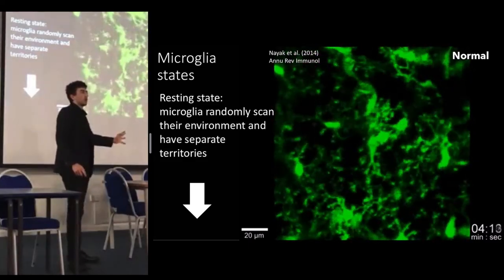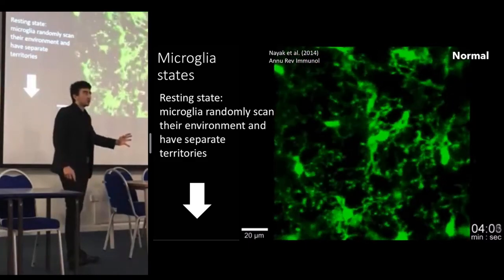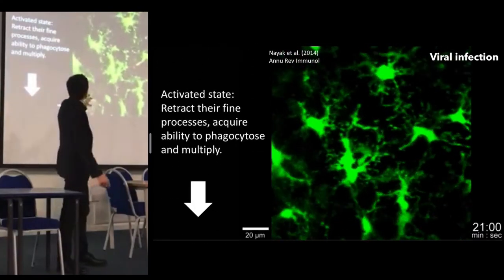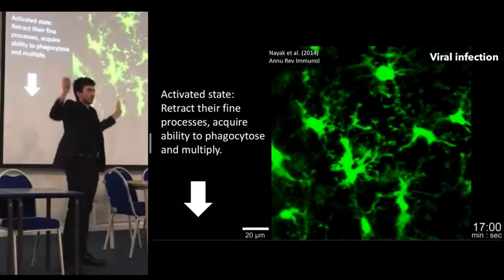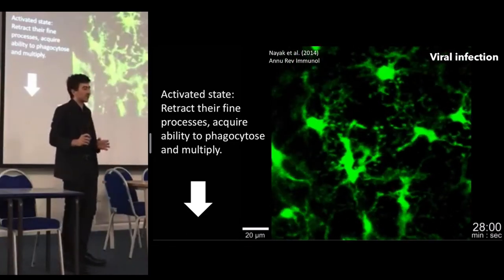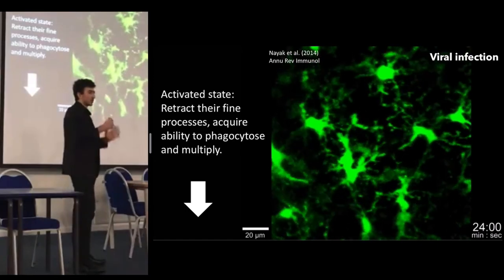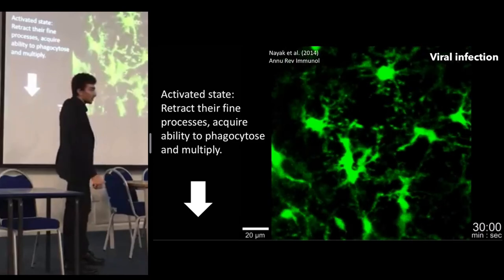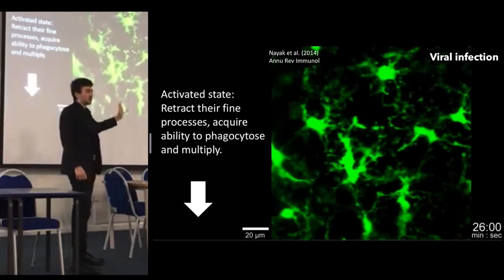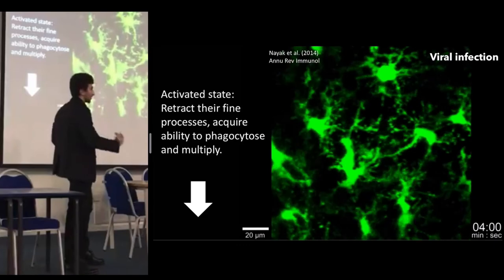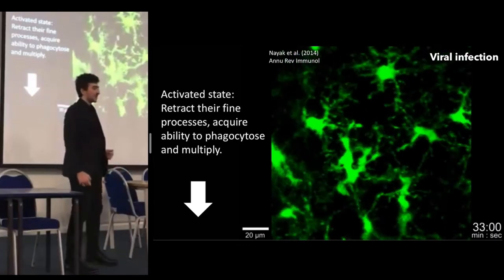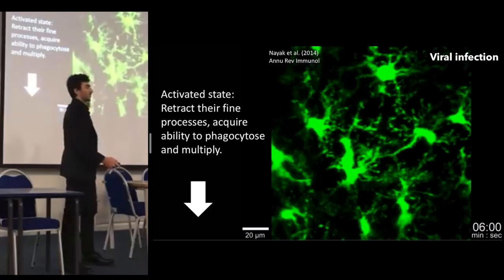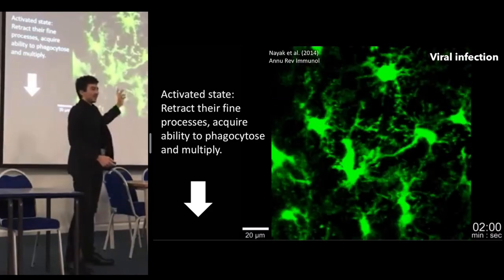Now compare that to the brain in which a virus has been injected. Do you see the difference? The microglia have retracted their fine processes by dissolving parts of the cytoskeleton that were keeping those fine processes in shape. Once that happens, the processes become retracted and the microglia acquire the ability to multiply and carry out phagocytosis — they become chunkier and more defensive.